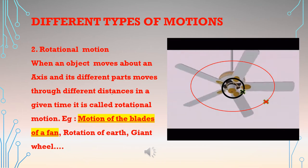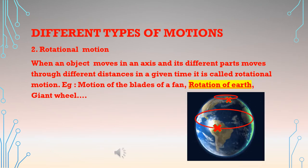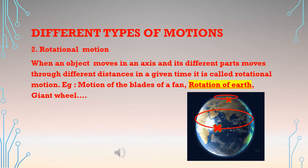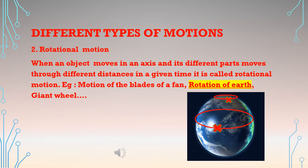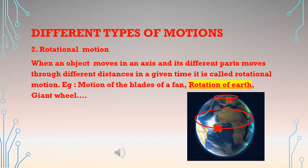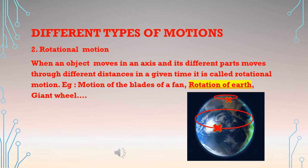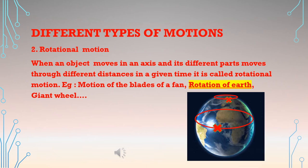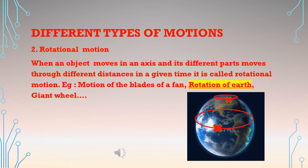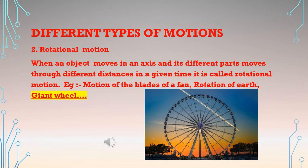In the case of the earth, places near the equator make a big circle — they move through a large distance during one complete rotation — whereas places near the poles make a small circle and move through a small distance. Thus different places on the earth move through different distances during one complete rotation. Similarly, different points on a giant wheel also move through different distances during one rotation.